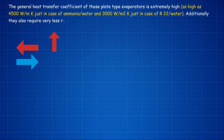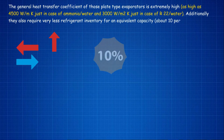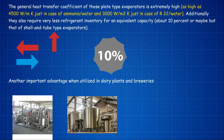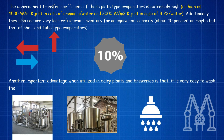Additionally, plate type evaporators require very less refrigerant inventory for an equivalent capacity — about 10% or maybe less of that of shell and tube type evaporators. Another important advantage when utilized in dairy plants and breweries is that it is very easy to clean the evaporator and reassemble it back as and when required.